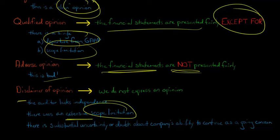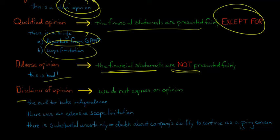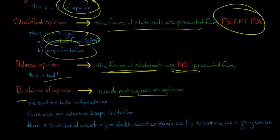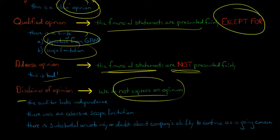If there's an extensive scope limitation — and this is different from the qualified opinion where there was just one thing we weren't able to do — if there's an extensive scope limitation where basically the auditor is saying we weren't able to do our job, we weren't even really able to conduct this audit, so we can't express an opinion. It could be that management was preventing them from looking at things like counting the inventory, or it could just be something with the circumstances that wasn't the company's fault. But in any case, there was a huge scope limitation, and the auditor is not able to express an opinion. So they come out and say, here's a disclaimer — we can't actually express an opinion on these financial statements.